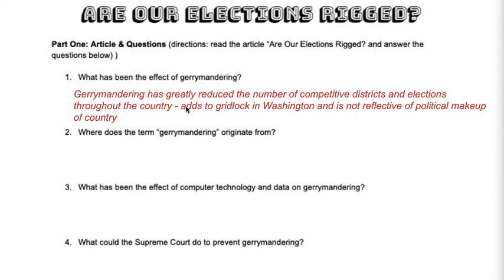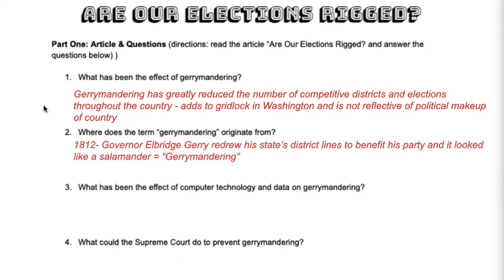Where does gerrymandering originate from? It has a funny story. It goes back to 1812 when a guy named Elbridge Gerry was the governor. He redrew his district to benefit his party, and it looked a little bit like a salamander. There's actually a cartoon posted within the article you can look at. So they combined the words 'Gerry' and 'salamander' into gerrymandering.